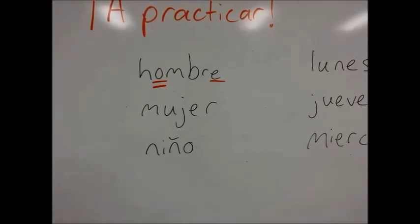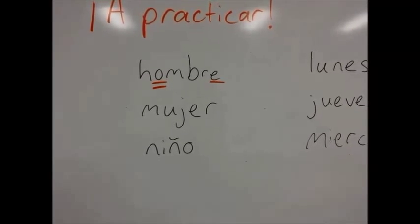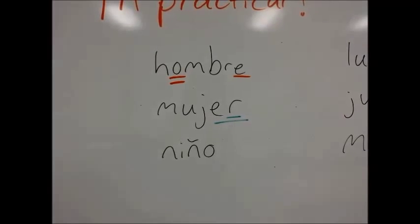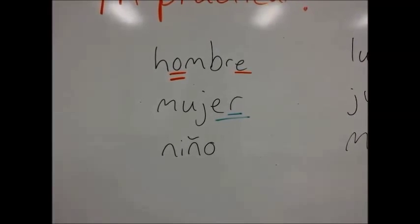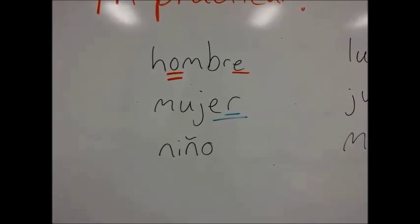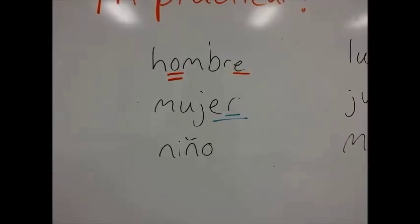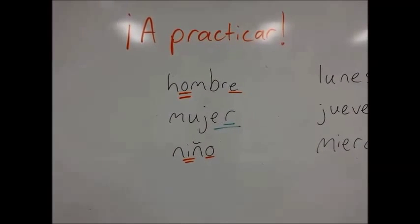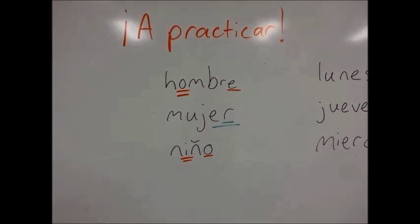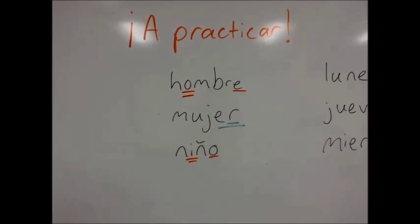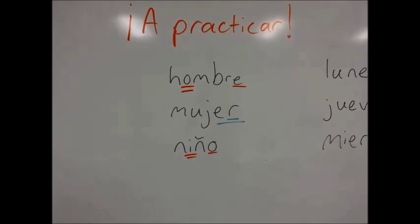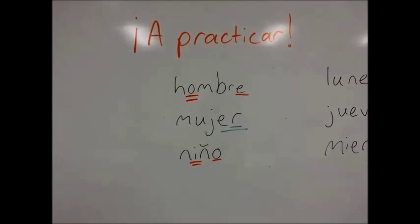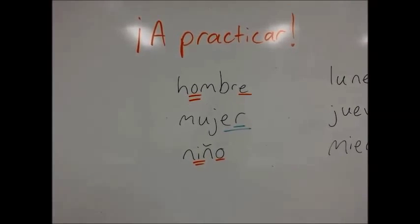Now let's try the word mujer. Since the pronunciation is mujer and the emphasis really does fall on the last syllable, we don't need an accent. Now let's try niño. Niño ends in O, which makes it llana, so the emphasis is on the second to last syllable. Since the emphasis really is on the second to last syllable, we don't need an accent mark — niño.